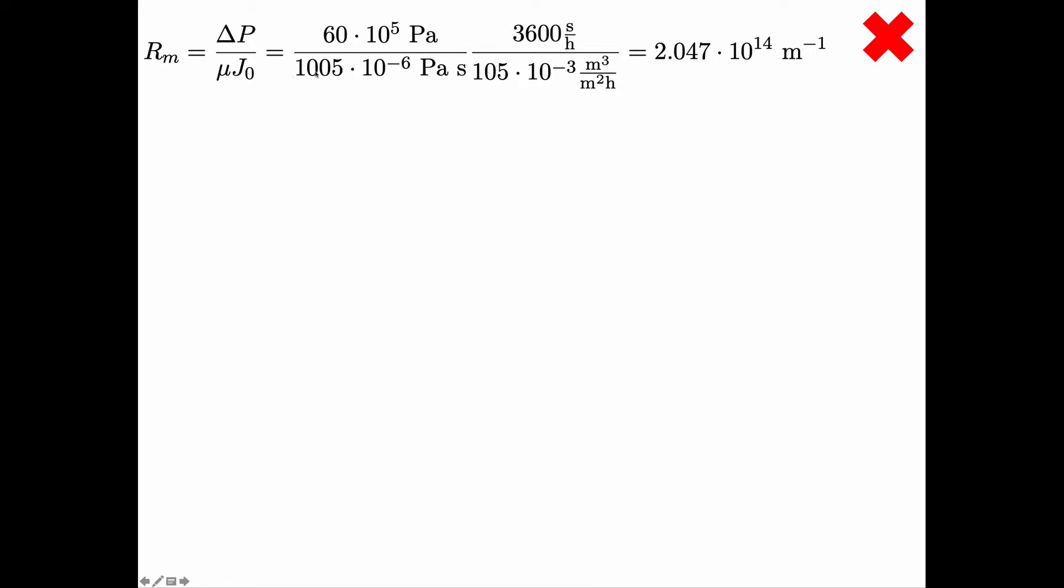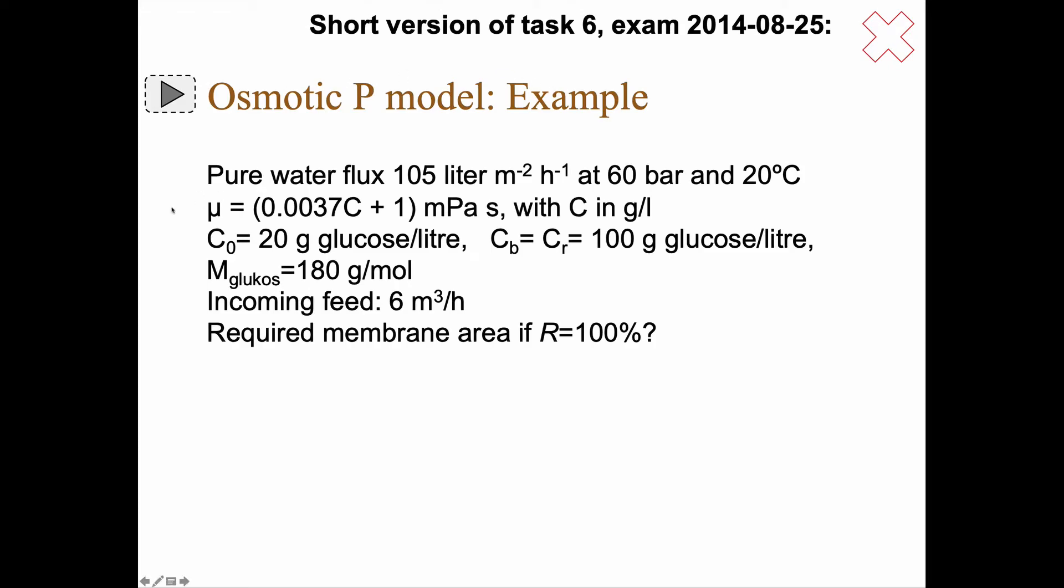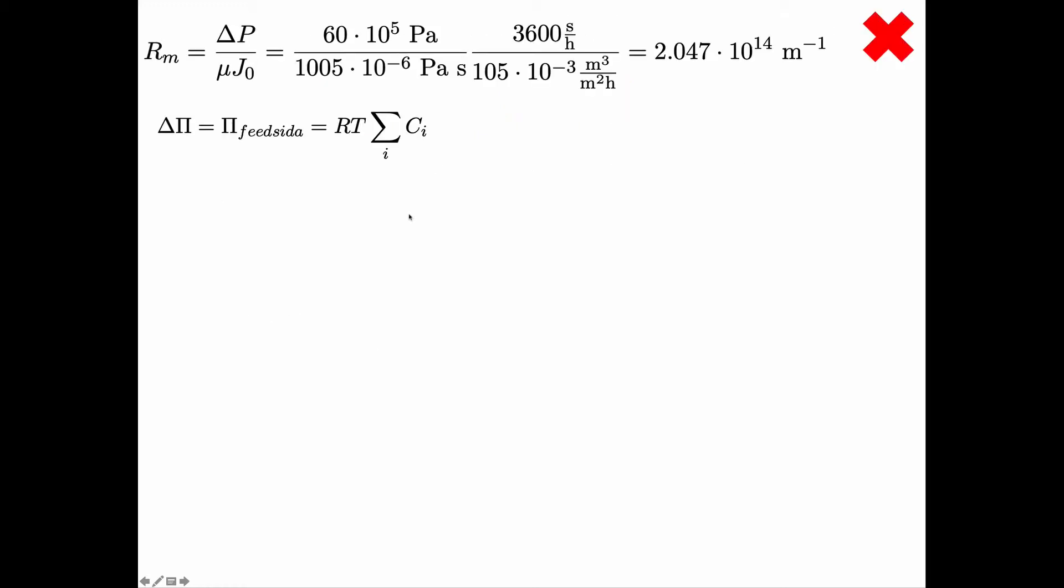The viscosity at 20 degrees you have to look that up in the table for water, that is 1005·10⁻⁶ pascal seconds. We actually had that, didn't we? We have an equation here and if you put in C₀ zero here you actually get 1000. If you take a table value you get that 1005. So I'm a bit more careful here with this number. But if you had put in 1000 there I would say well yeah you use the equation given so fine. You had 105 as the J flux but we had to convert it into SI units like this.